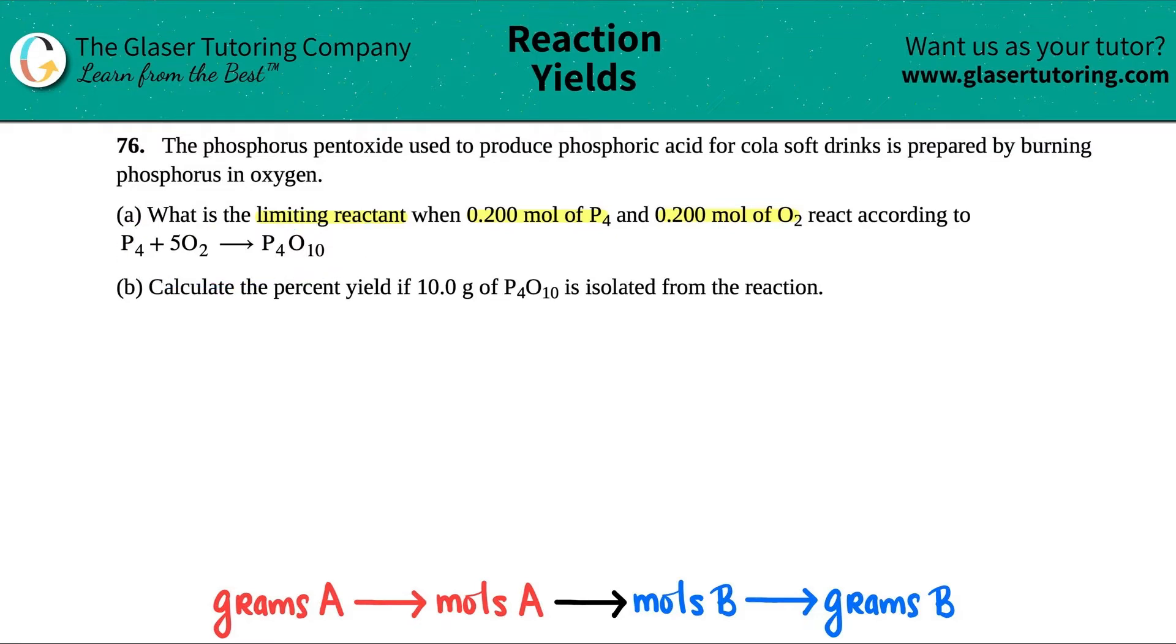Okay, so you know the drill. We got to write this out big. P4 plus 5O2 yields P4O10. Now, I already see that they put a 5 here, which means that this is balanced. But if you want, you can pause the video and see if it's balanced.